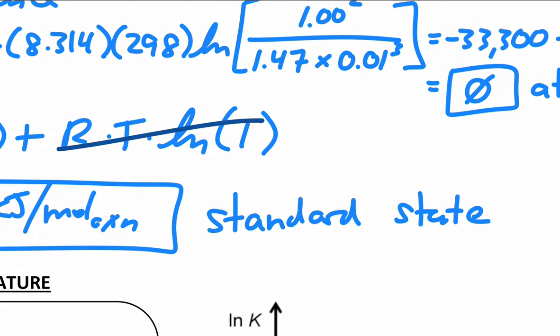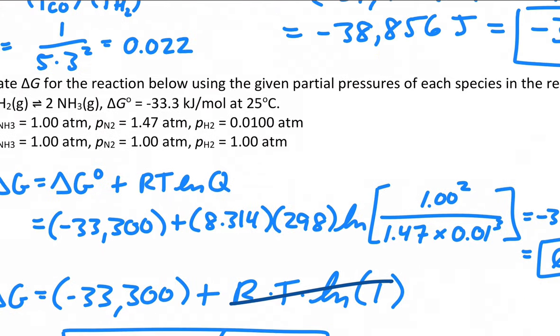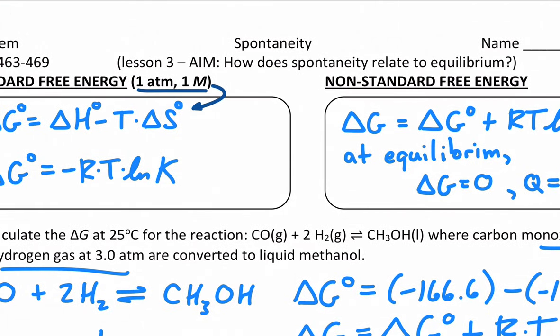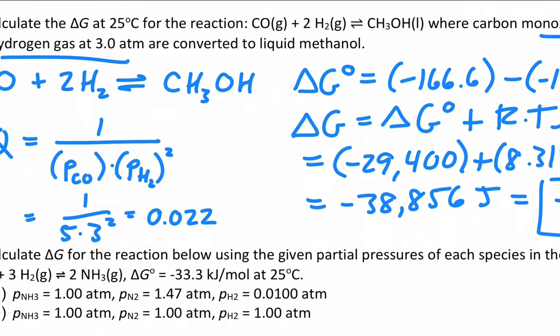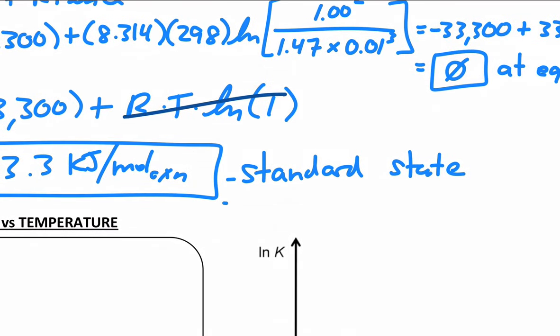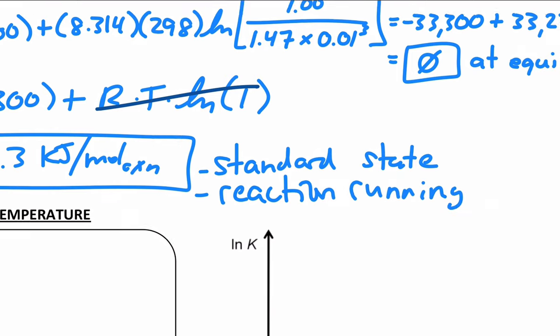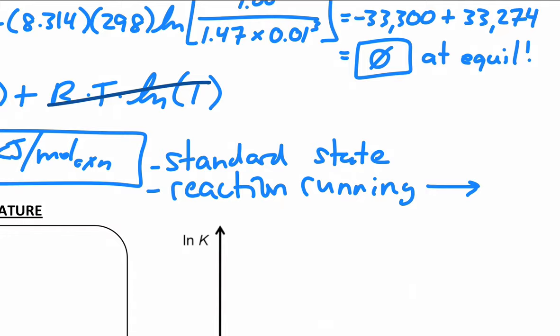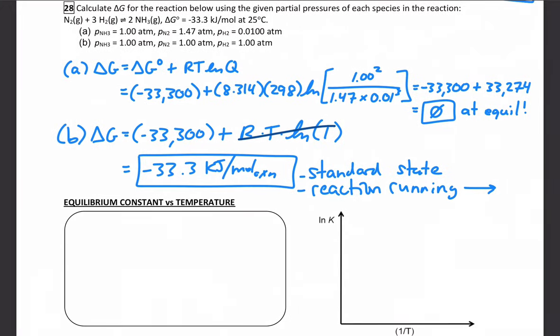Remember standard conditions refers to, it's up at the top here, one atmosphere for your gases and one molar for aqueous species. That also tells us the reaction is running forward because it's negative delta G. Reaction is running forward.